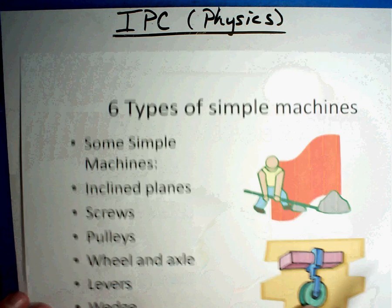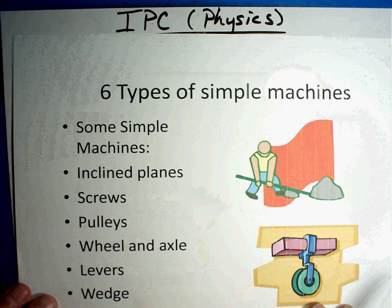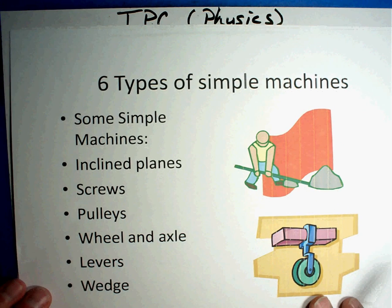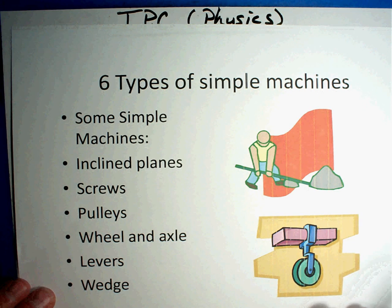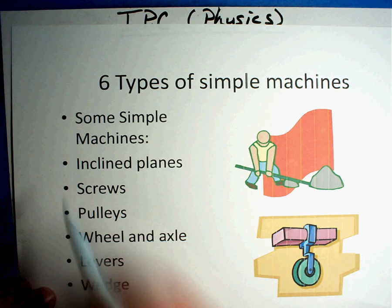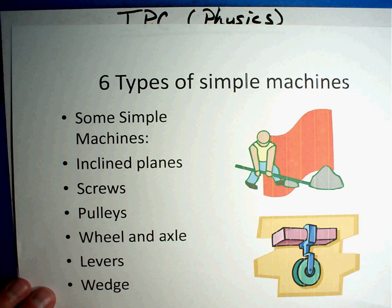They make our work a lot easier. Here are six simple machines. And so you'll want to write these down. So there's six of them. One, two, three, four, five, six. I'll give you a second to pause the video, and then we'll come up and talk about it.